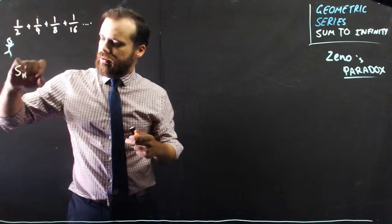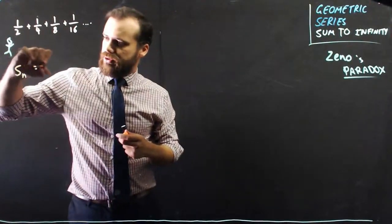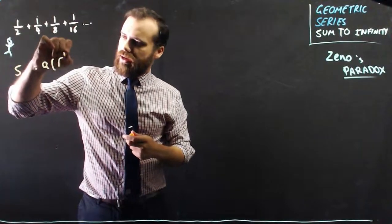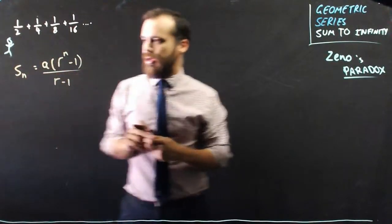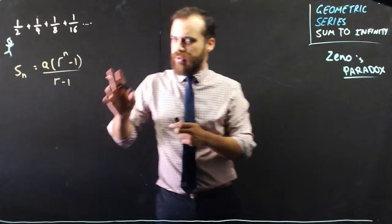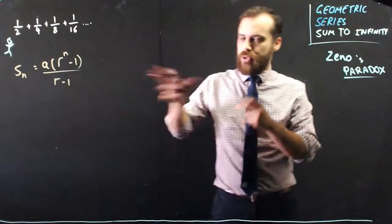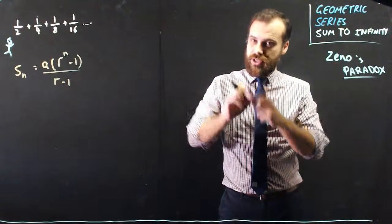The sum of n terms is equal to a times r to the n minus 1 over r minus 1. Now, that's how we've always used the formula, but we could rewrite it a slightly different way.